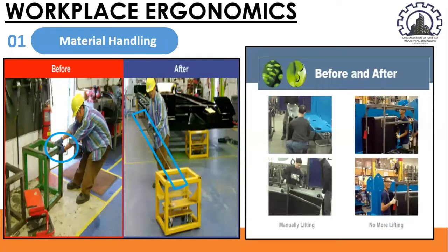Another topic we have is workplace ergonomics. Remember, workplace design is the science of designing the workplace keeping in mind the capabilities and limitations of the workers. When we design the workplace, it should be the best design possible. Because if not, then poor worksite design leads to fatigued, frustrated, and hurting employees. Because of this, we should not expect our workers to be productive, and more likely it leads to painful and costly injury, lower productivity, and poor product quality.